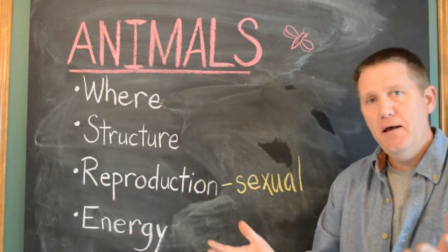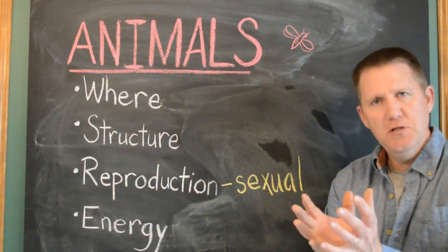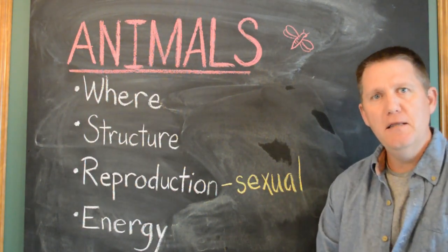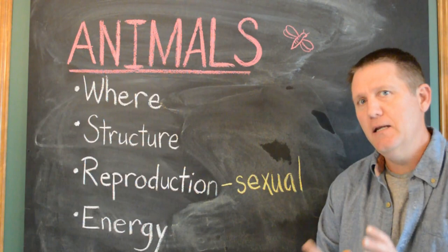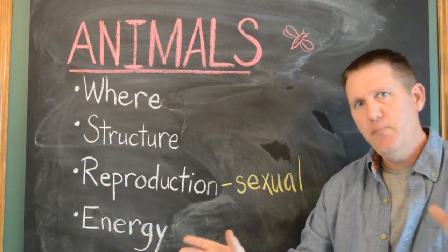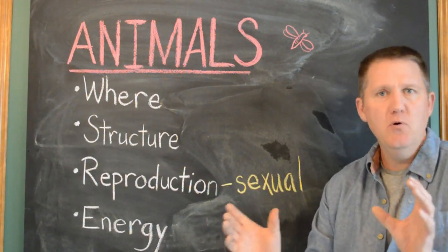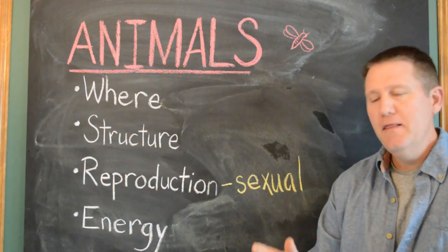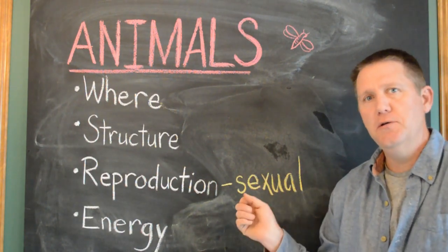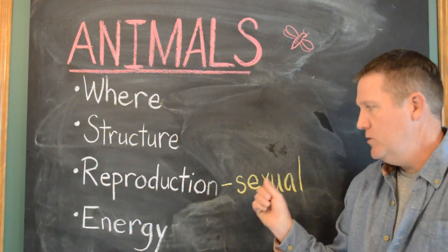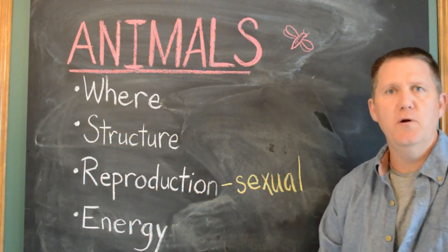And most animals have really dedicated themselves to sexual reproduction. Now, plants reproduce sexually, but they have both male and female parts in the same flower and can often pollinate themselves. But animals have taken it to the next degree and separated genders, in most cases, where they have to reproduce sexually.